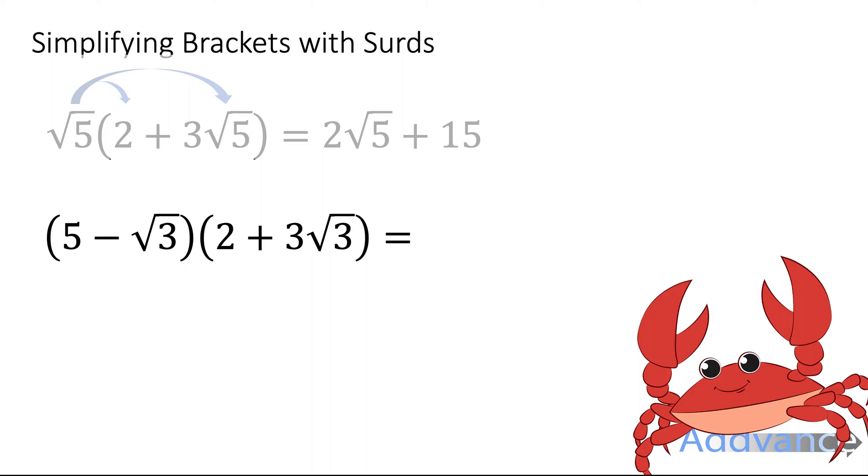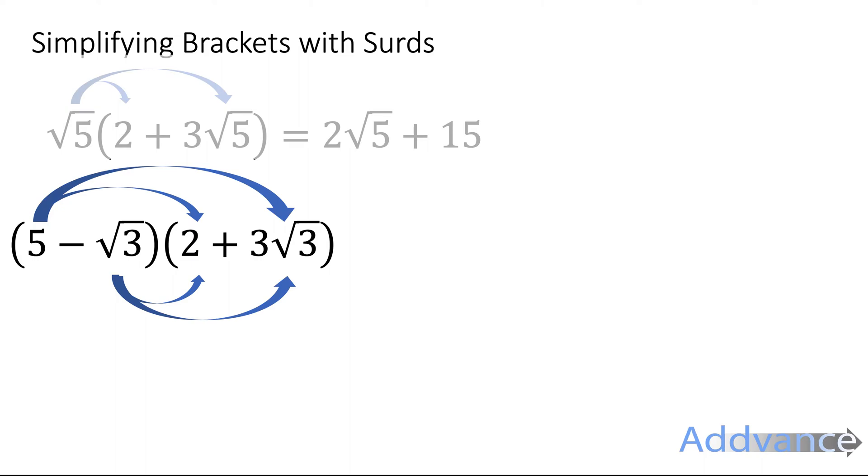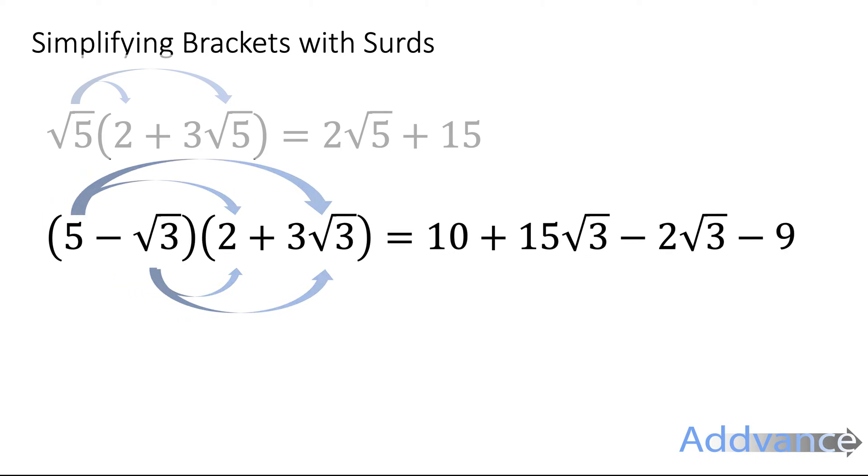Now let's look at the crab's claw. So we have our friendly crab here to help us with the claw. We're going to multiply out the brackets like this. 5 times 2 is 10. 5 times 3 root 3 is 15 root 3. Minus root 3 times 2 is minus 2 root 3. And minus root 3 times 3 root 3. We can simplify that as root 3 times root 3 is 3. And then minus 3 times 3 is minus 9. Be careful you are multiplying positive and negative numbers here. Collecting like terms, 15 root 3 minus 2 root 3 would be 13 root 3. And 10 minus 9 would be 1. And that is the final answer.